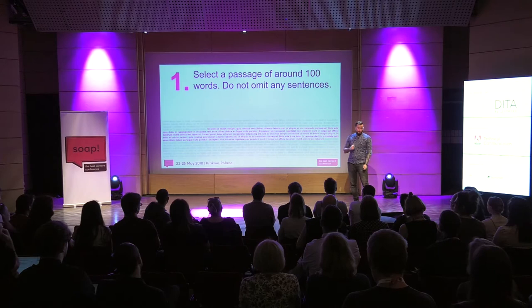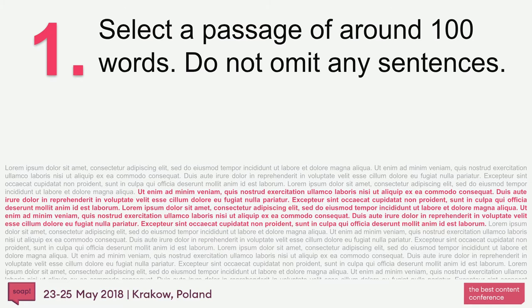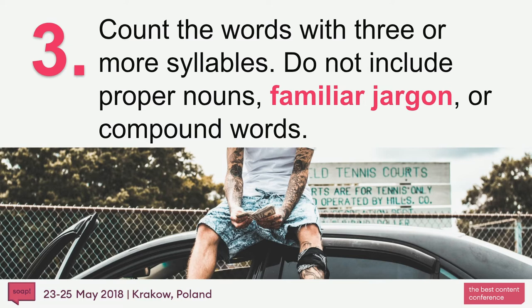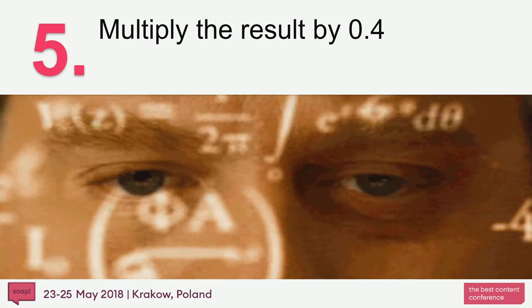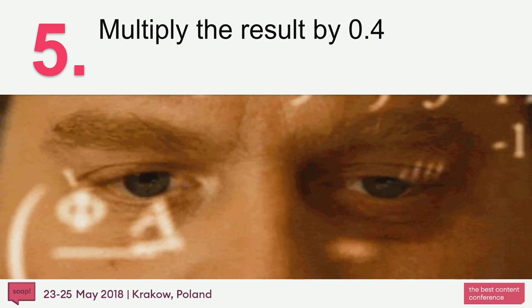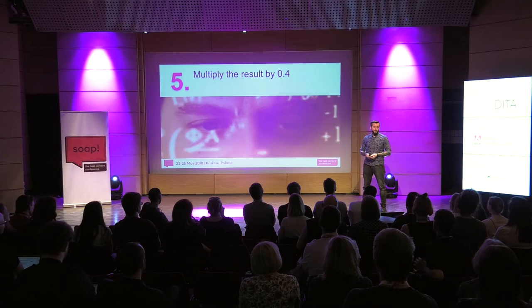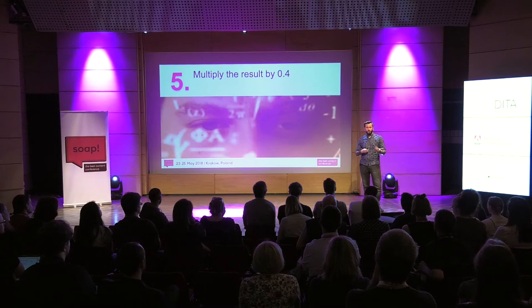I'm going to walk you through the algorithm of how the Gunning Fog Index calculates readability. First, select a passage of around 100 words — one uninterrupted block from your text. Divide the number of words by the number of sentences. Count the words with three or more syllables; do not include proper nouns, familiar jargon, or compound words — I highlighted 'familiar jargon' and I'll come back to that. Add the average sentence length and the percentage of complex words, then multiply the result by 0.4. The methodology is available online. People arrived at it through studies and science.